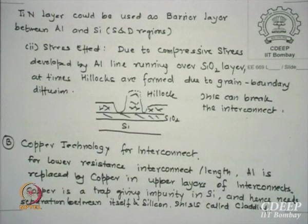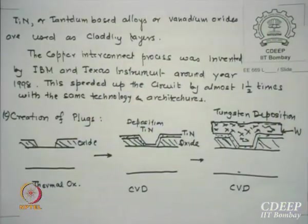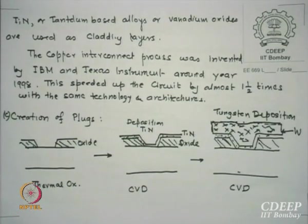Whatever copper is going must be surrounded by a barrier material. What is such a surrounding system called in fiber optics? Cladding. So all copper lines must be cladded by titanium nitride or some other barrier material. Tantalum-based alloys or vanadium-based oxides and nitrides, as well as titanium nitrides, are excellent cladding materials normally surrounding copper lines.